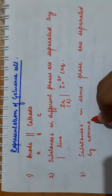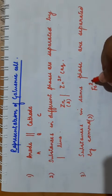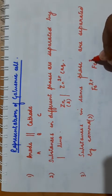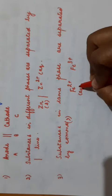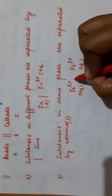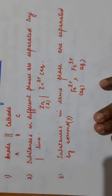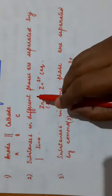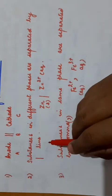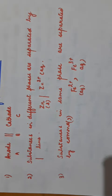For example, if you have Fe²⁺ and Fe³⁺ in the same electrolyte — both are in aqueous form — you will use a comma between them to separate them. So the representation is: anode, then salt bridge, then cathode. Substances in different phases are separated by a single vertical line, and substances in the same phase are separated by a comma.